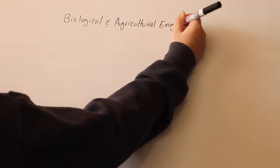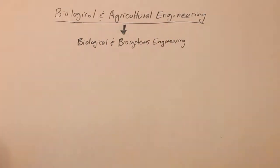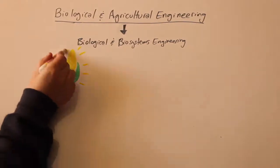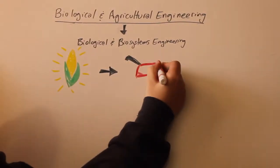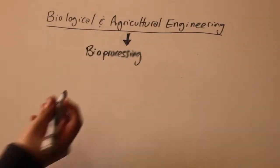Biological and Systems Engineering is a field that uses engineering methods and the principles of biology to make the most of natural resources and to solve problems related to agriculture and the environment. An example of this is bioprocessing,